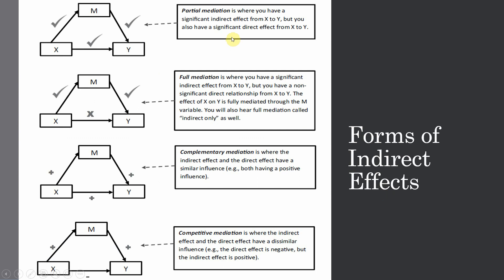There are different forms of indirect effects. There could be partial mediation, when some of the effect passes through M and some passes directly — meaning the indirect path from X to M to Y is significant, and the direct path is also significant. Full mediation is where you have a significant indirect effect from X to Y through M, but the direct effect is insignificant. The whole effect of X on Y passes through the third variable M, so we call it full mediation.